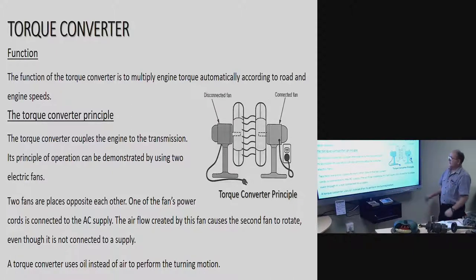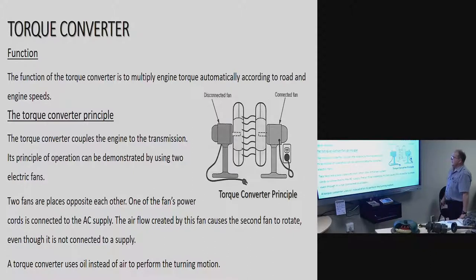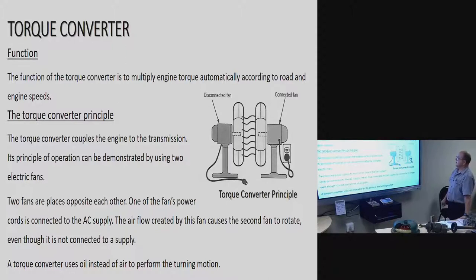Torque converter principle. The torque converter couples the engine to the transmission. On a normal car with a clutch, the clutch couples the gearbox and the engine together. But on an automatic car, the torque converter actually performs that coupling between the engine and the gearbox.